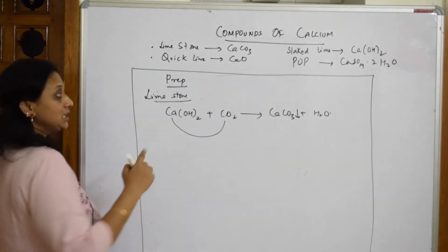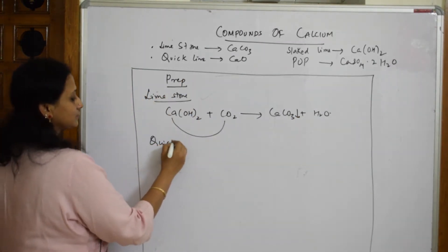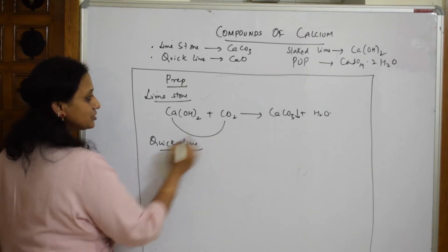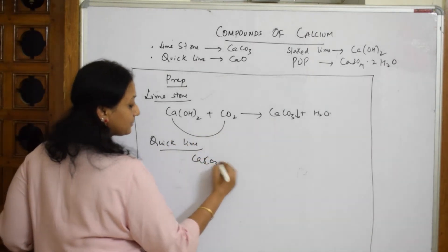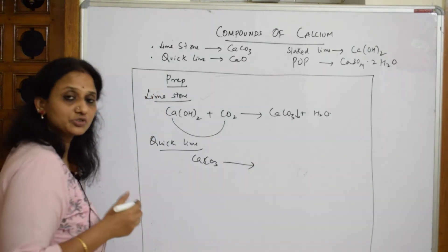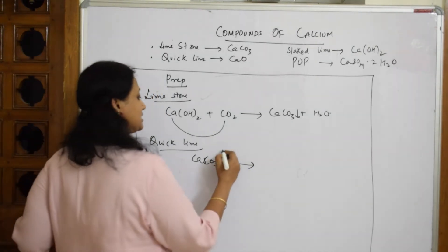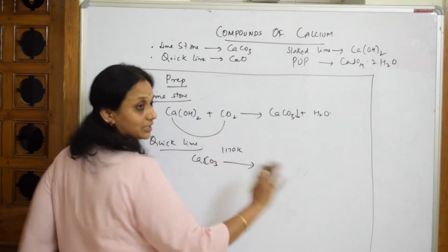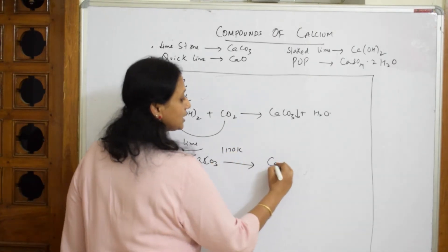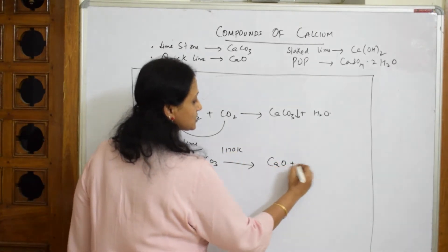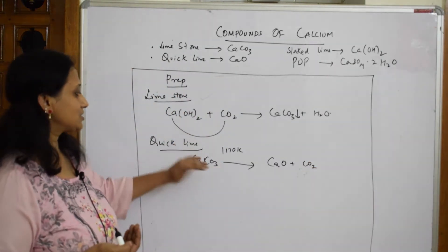To prepare quicklime, we take calcium carbonate and heat it to around 1170–1230 Kelvin. At that temperature it dissociates into calcium oxide plus carbon dioxide — we are simply decomposing it.